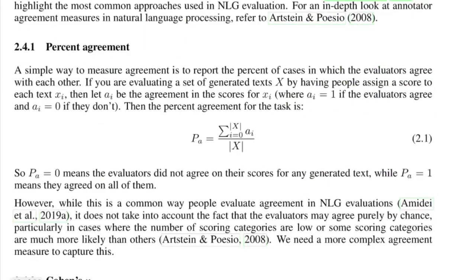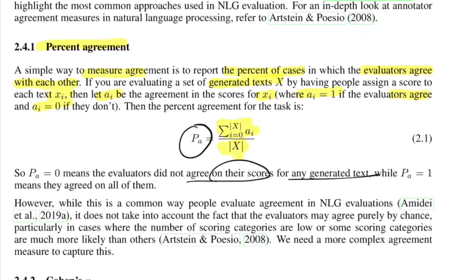The first formula is percentage agreement (PA) — a simple measure of the percentage of cases where evaluators agree. For a set of x test sentences, where each sample is xi and ai is the agreement score (1 if evaluators agree, 0 if they don't), PA is the sum of agreements divided by total number of samples. If PA equals 0, none of the evaluators agree; if PA equals 1, all of them agree on all samples. However, PA does not account for the fact that evaluators may agree purely by chance.